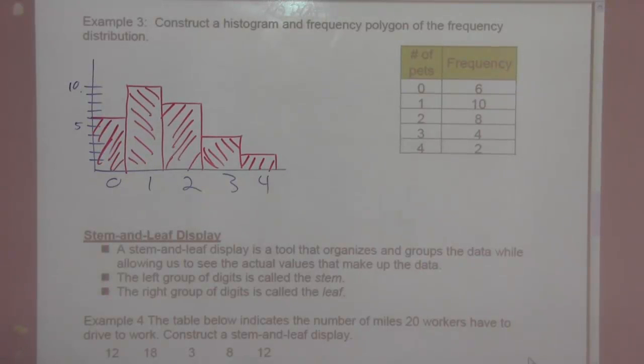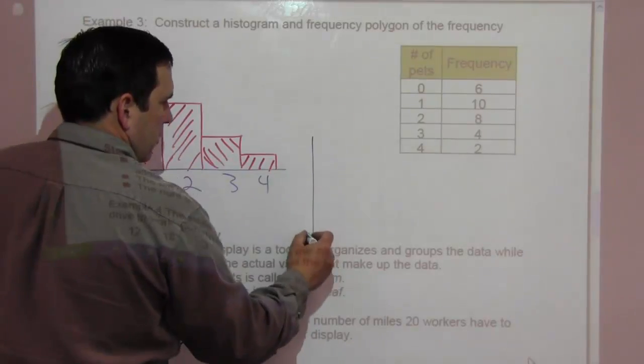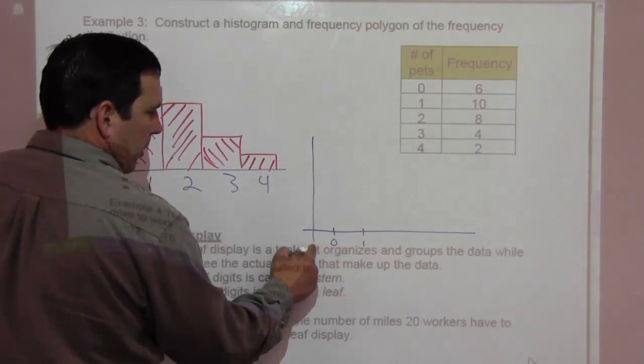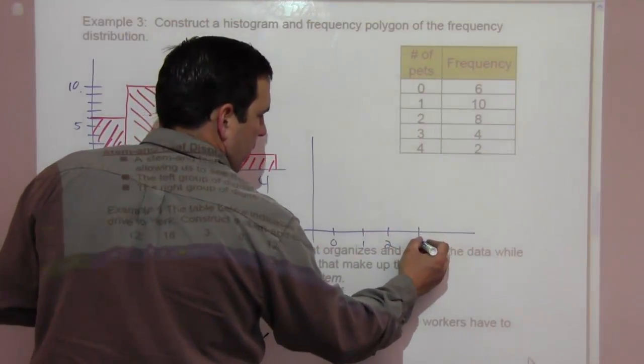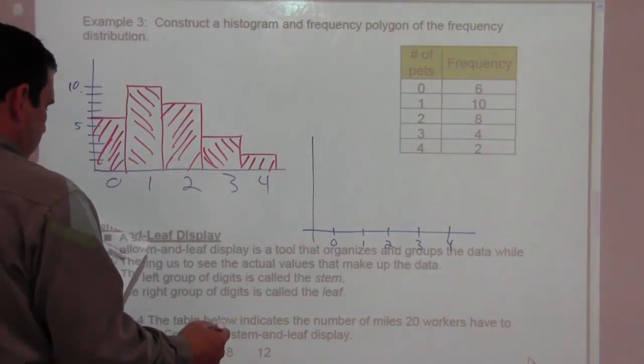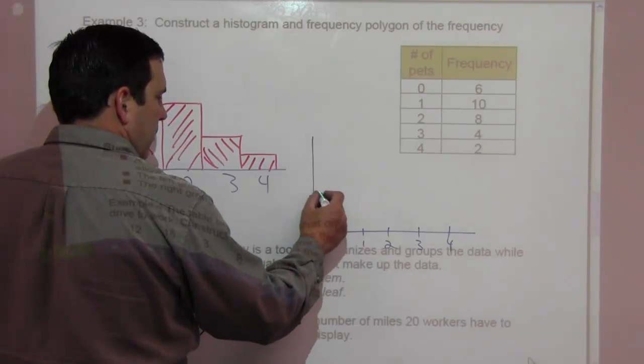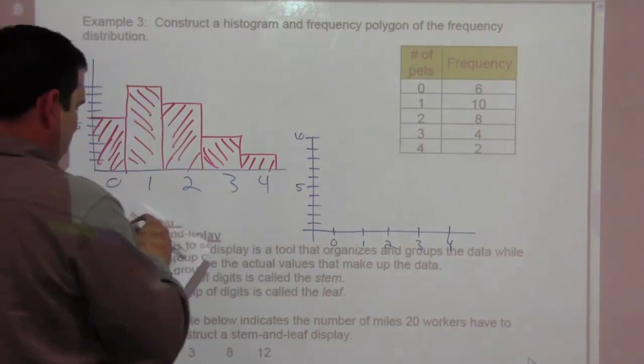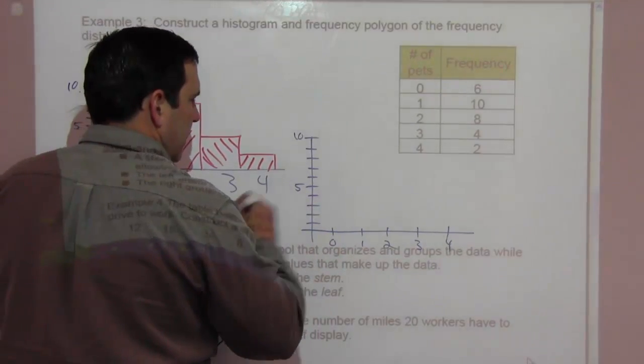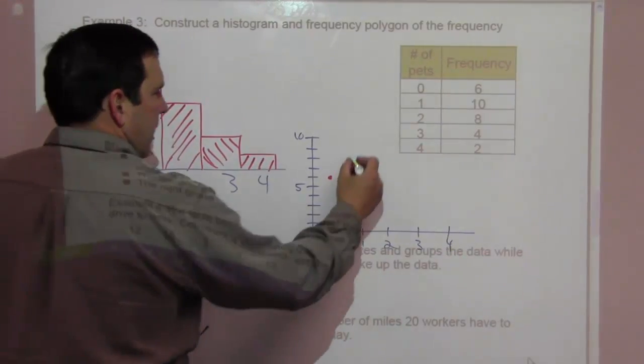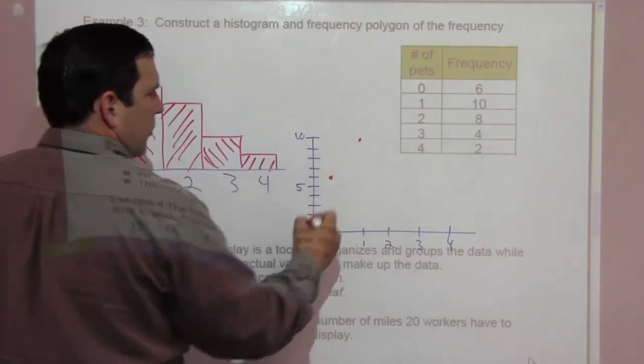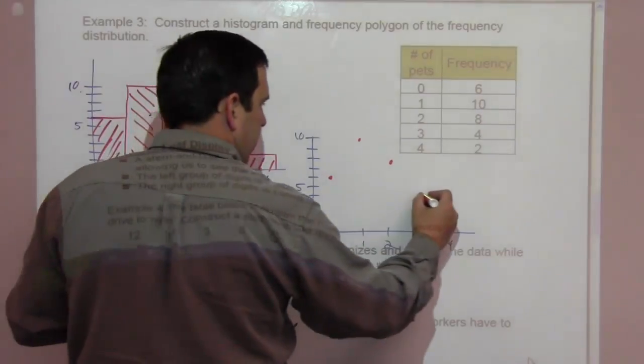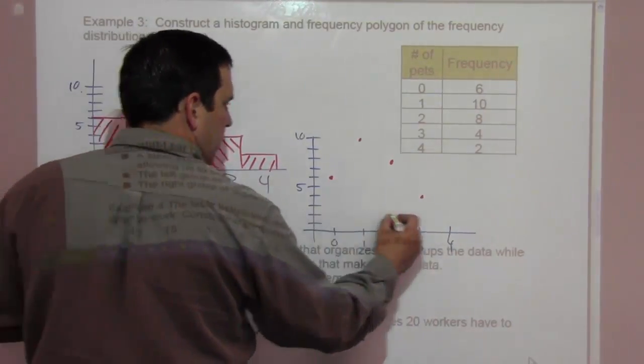Now, frequency polygon, and you could have zero be right here, but I'll do there. One, two, three, and four. For zero pets, we're at six. For one pet, we're at ten. For two pets, we're at eight. For three pets, we're at four. And for four pets, we're at two.